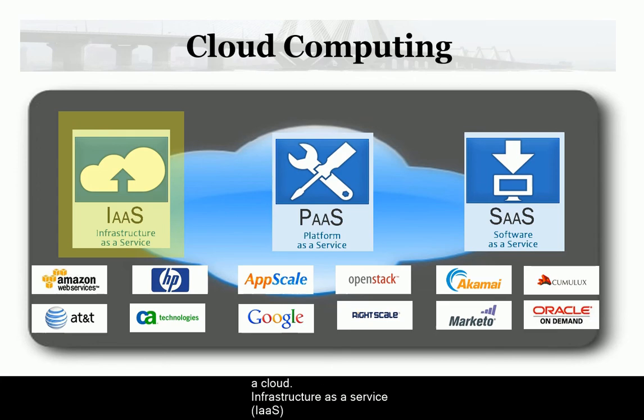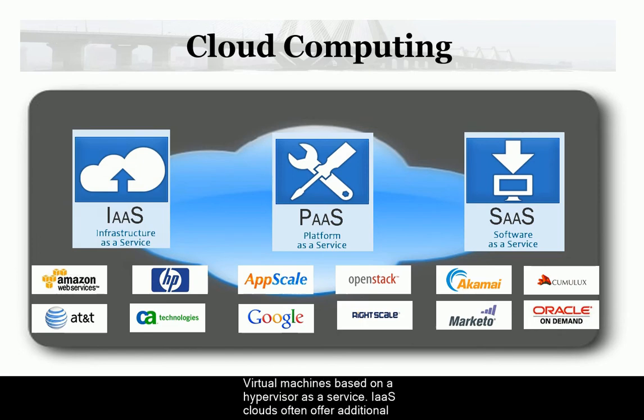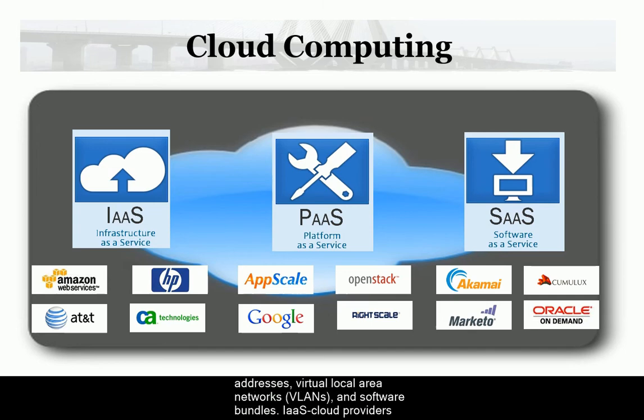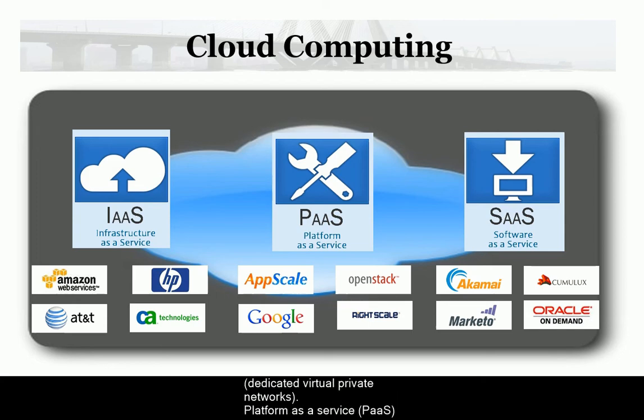Infrastructure as a Service (IaaS) provides virtual machines based on a hypervisor. IaaS clouds often offer additional resources such as virtual machine disk image libraries, firewalls, load balancers, IP addresses, virtual local area networks (VLANs), and software bundles. IaaS cloud providers supply these resources on demand, and customers can use either internet or carrier clouds with dedicated virtual private networks.